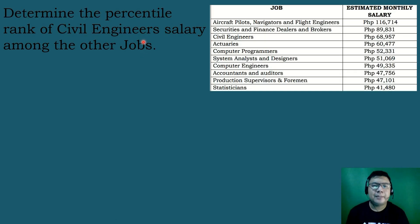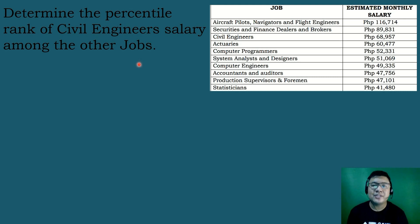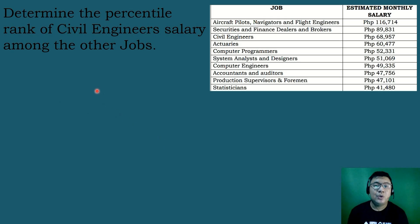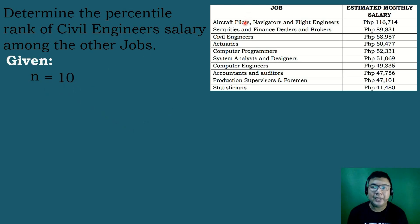To determine the percentile rank of the civil engineer's salary among the other jobs, the first step is to make sure that the given values are arranged from highest to lowest or vice versa. Since the given has already been arranged, the next step is to identify the given. We will identify the total number of jobs on our table — all in all, we have 10 jobs, so N is equal to 10.